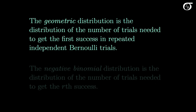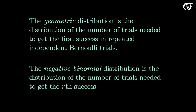Before we look at calculating probabilities using the negative binomial distribution, let's look at how it relates to a couple of other important discrete probability distributions. The geometric distribution is the distribution of the number of trials needed to get the first success in repeated independent Bernoulli trials. The negative binomial distribution generalizes this — it is the distribution of the number of trials needed to get the r-th success in repeated independent Bernoulli trials. So if we're interested in the number of trials to get the second success, r equals 2, and for the twelfth success, r equals 12.